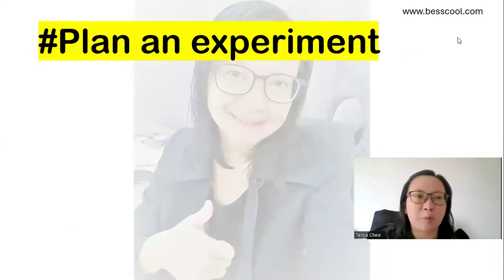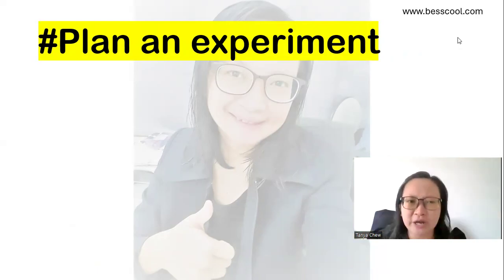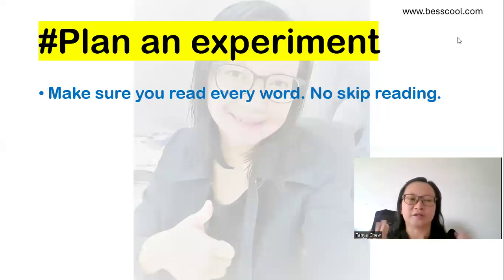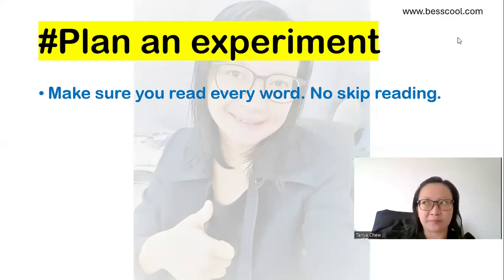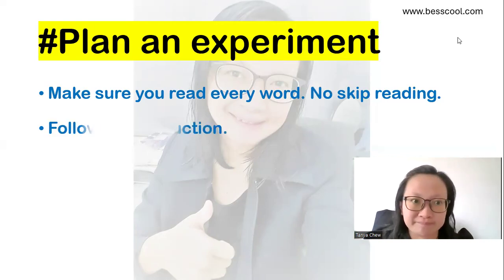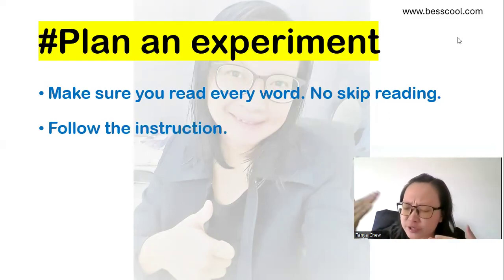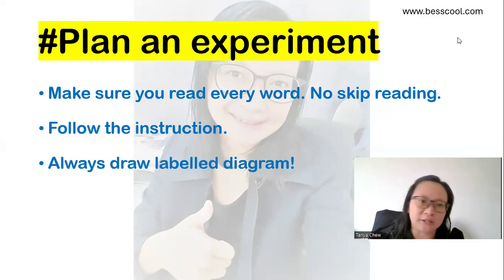The next one, which is the last part, planning experiment. This is super duper important because they give you seven marks for this. The tips are: make sure that you read every single word. No skip reading, please, because you might miss some important information. And follow the instruction, just follow instruction closely. And always draw labeled diagrams. So there are a lot of benefits, a lot of advantages of drawing the labeled diagram. First is that you could plan your experiment in a more systematic way. And then whenever you draw, you can see the whole thing, you can imagine the whole thing. And then you can write your methods in a more appropriate way.